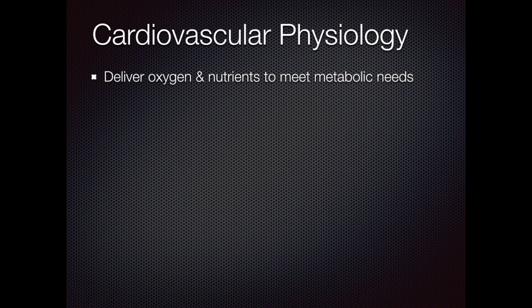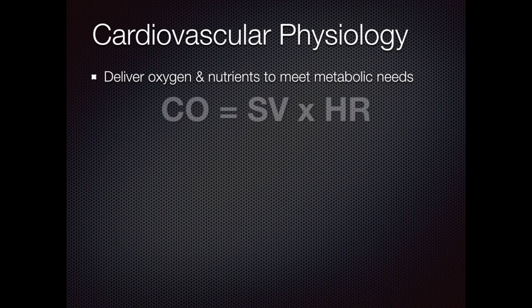The cardiovascular system is designed to deliver oxygen and nutrients to meet metabolic needs. When it fails, shock ensues. As previously mentioned, oxygen delivery is dependent on oxygen content and cardiac output. Cardiac output is defined by stroke volume times heart rate. When shock occurs, a greater oxygen content can be temporarily increased; however, to correct for the shock, the cardiac output needs to be optimized.